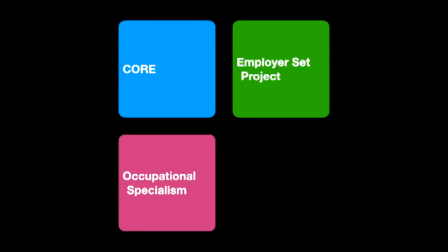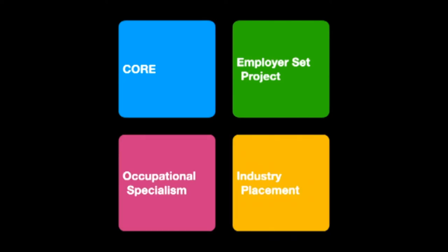The next element is what we call the occupational specialism. This is where the specific knowledge and skills are gained. If you are taking an infrastructure route, all the knowledge and skills will be focused towards networking and cloud. The final part is the industrial placement. This will last between 40 and 60 days spread over the two years, and it is intended to provide individuals with the opportunity to develop the knowledge, skills and behaviours required for skilled employment in their chosen occupation.